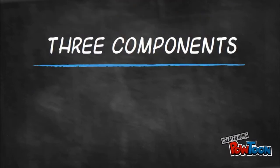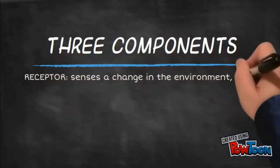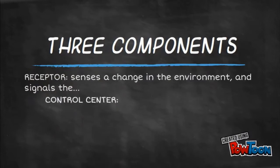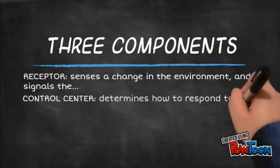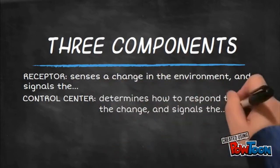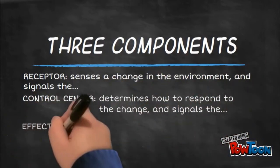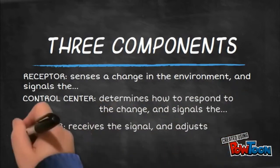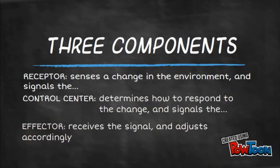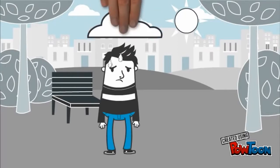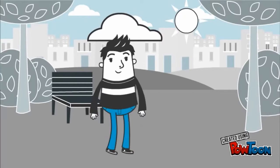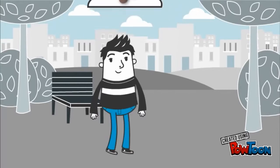All homeostatic mechanisms will have three components involved in the regulation. The receptor will sense any fluctuation within the environment and proceed to send a signal to the control center. The control center will then determine what sort of response is required to the change, and it will send the signal to the effector. The effector will then receive the signal and adjust accordingly. When the effector adjusts in a way that attempts to stabilize a variable — that is, bring it back within a normal range — it's called a negative feedback loop.